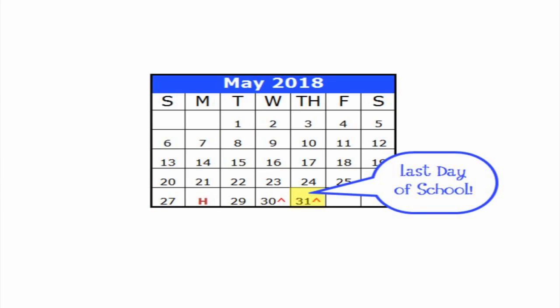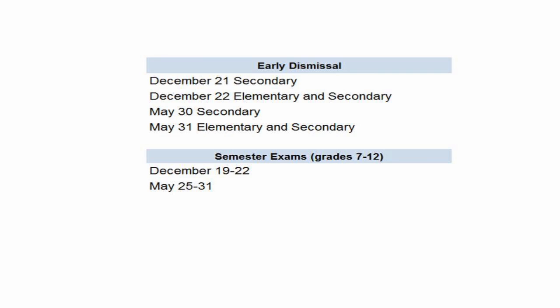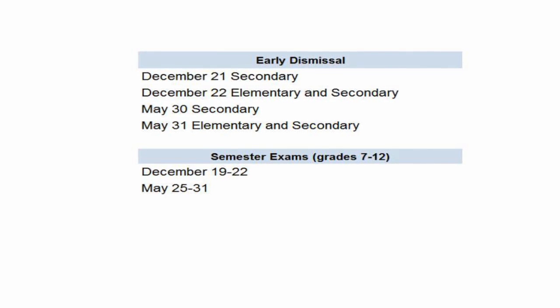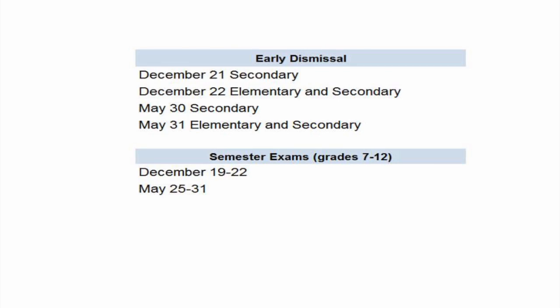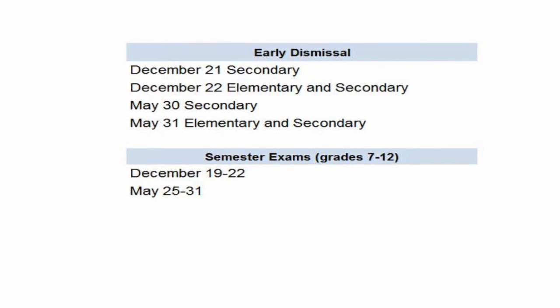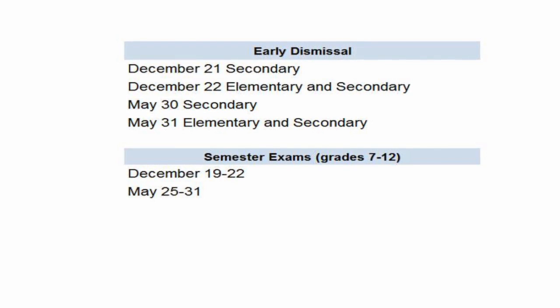The last day of school will be May 31st, which meets the desired outcome of ending school before June. Also included in the calendar are two early release days each semester for secondary students who are taking exams, and an early release day for elementary and intermediate students before winter break and on the last day of school.